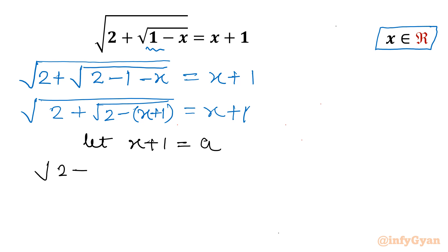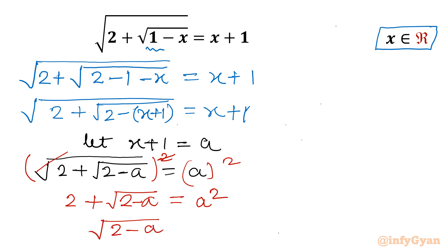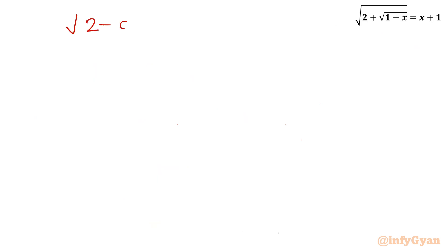So our equation will become: square root of (2 plus square root of (2 minus a)) equals a. Let's consider squaring both sides. After squaring, the outer square root is removed, leaving 2 plus square root of (2 minus a) equal to a squared. Take away 2 from both sides: square root of (2 minus a) equals a squared minus 2.